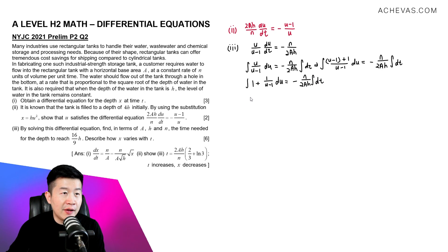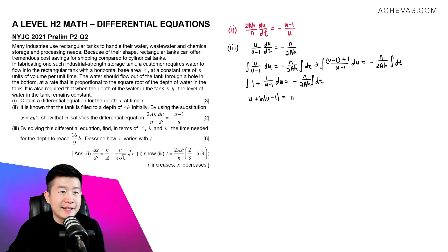Integrating both sides gives u plus ln|u minus 1| = negative n/(2Ah) · t plus an arbitrary constant b.